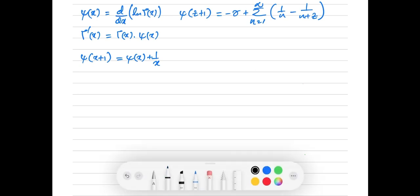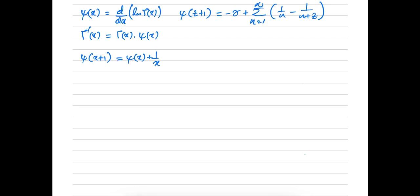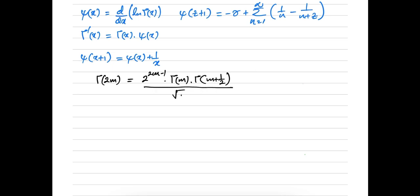This is the duplication formula of the gamma function — we also proved this identity in the previous video. This equals 2^(2m-1) · γ(m) · γ(m + 1/2) / √π. Now I am going to take the natural log of both sides. So here we have ln γ(2m) = ln of 2^(2m-1) · γ(m) · γ(m + 1/2).